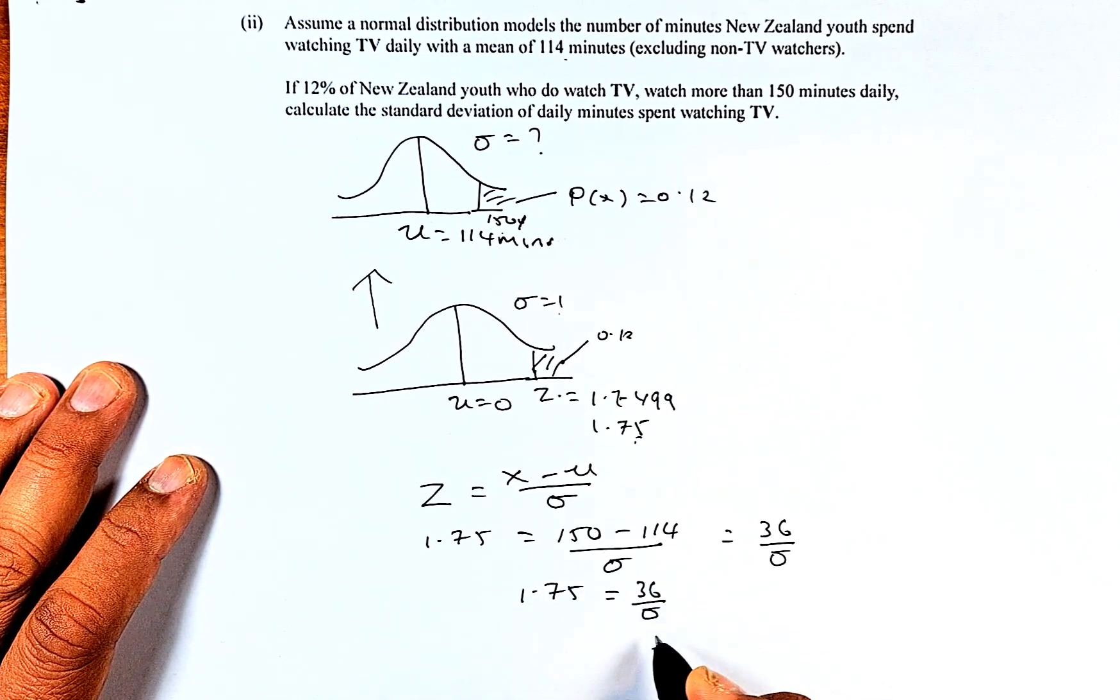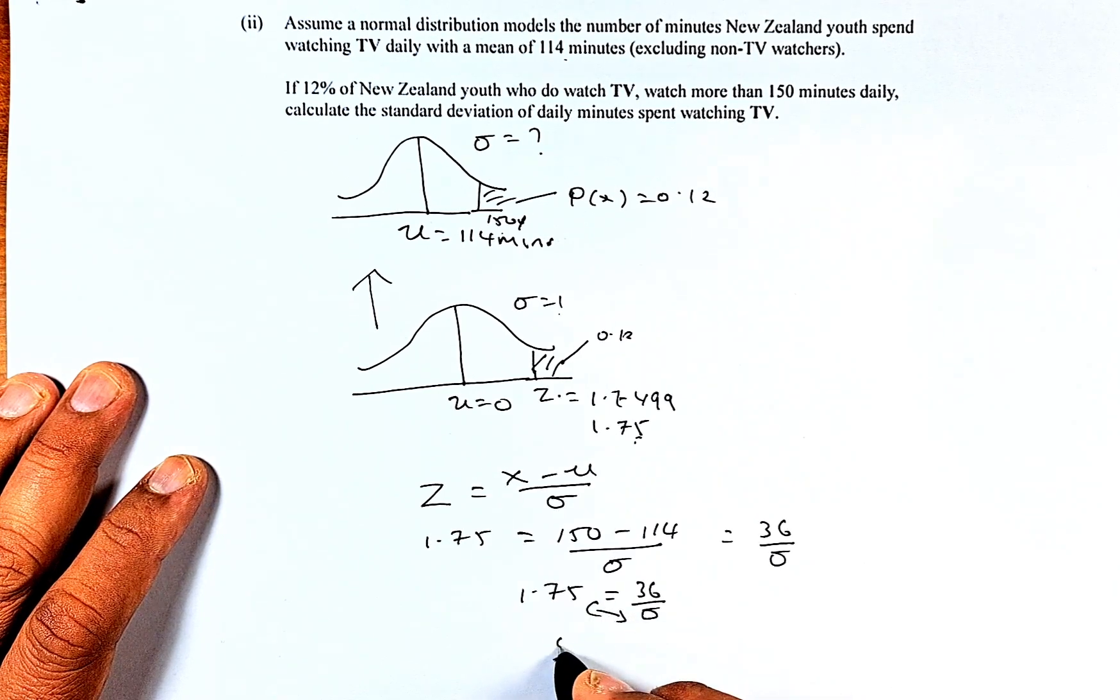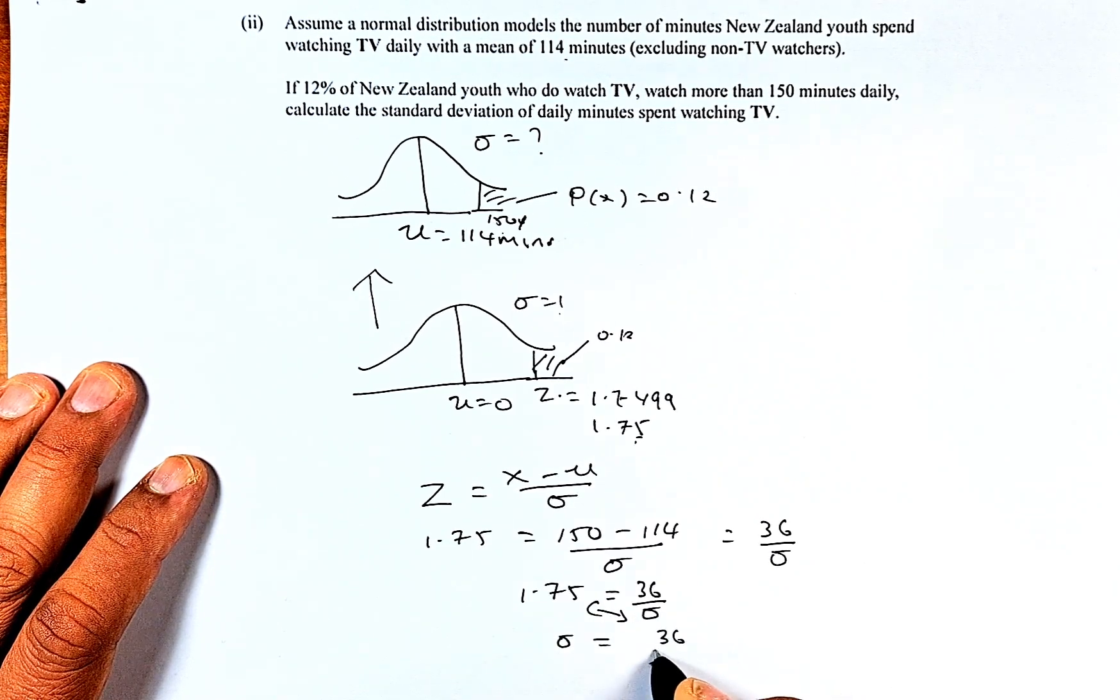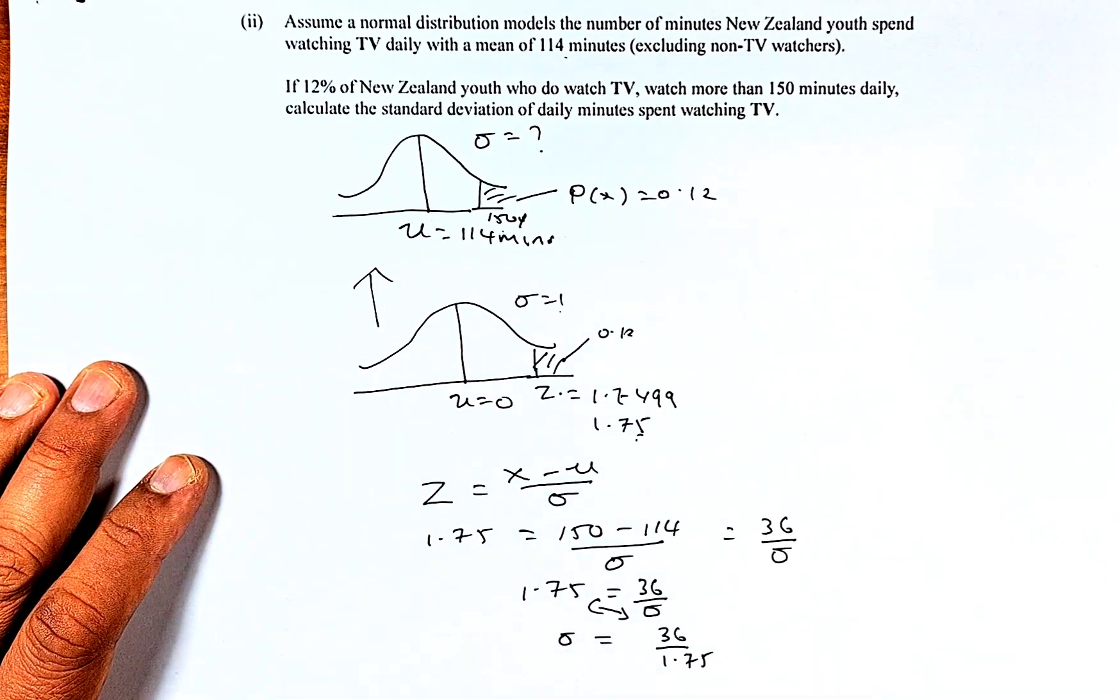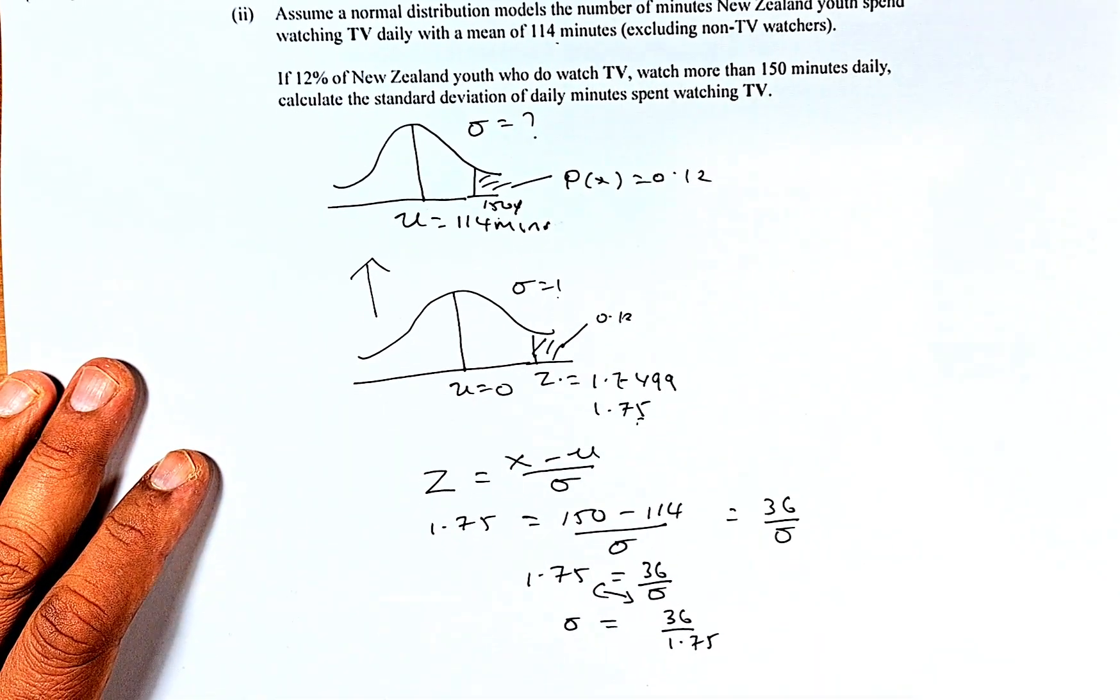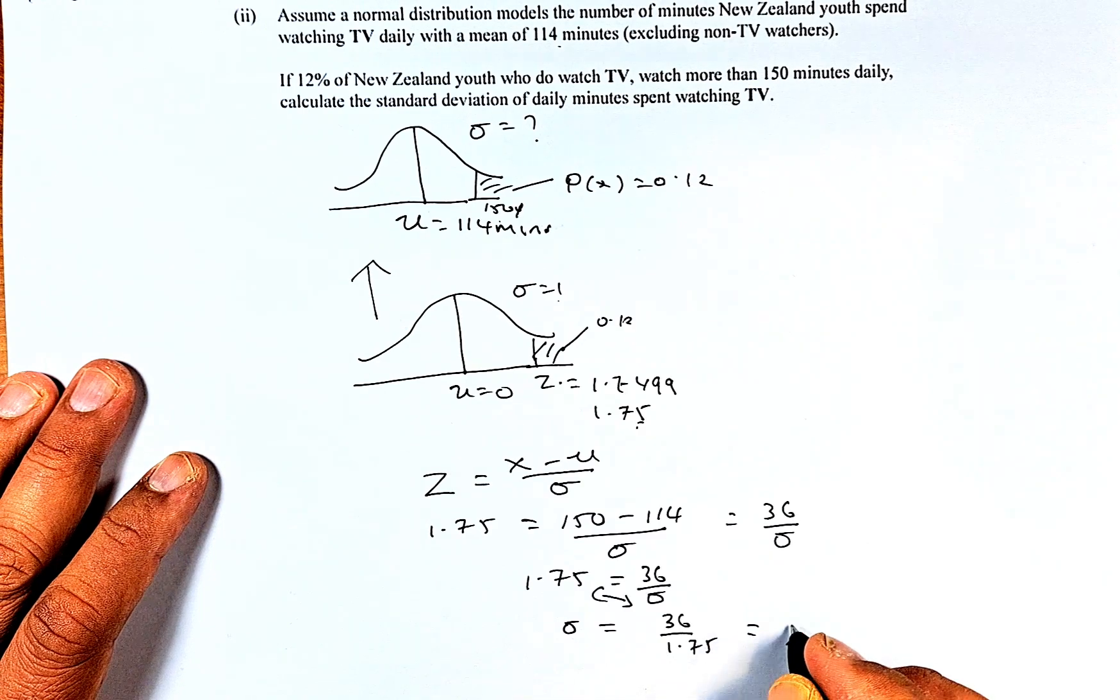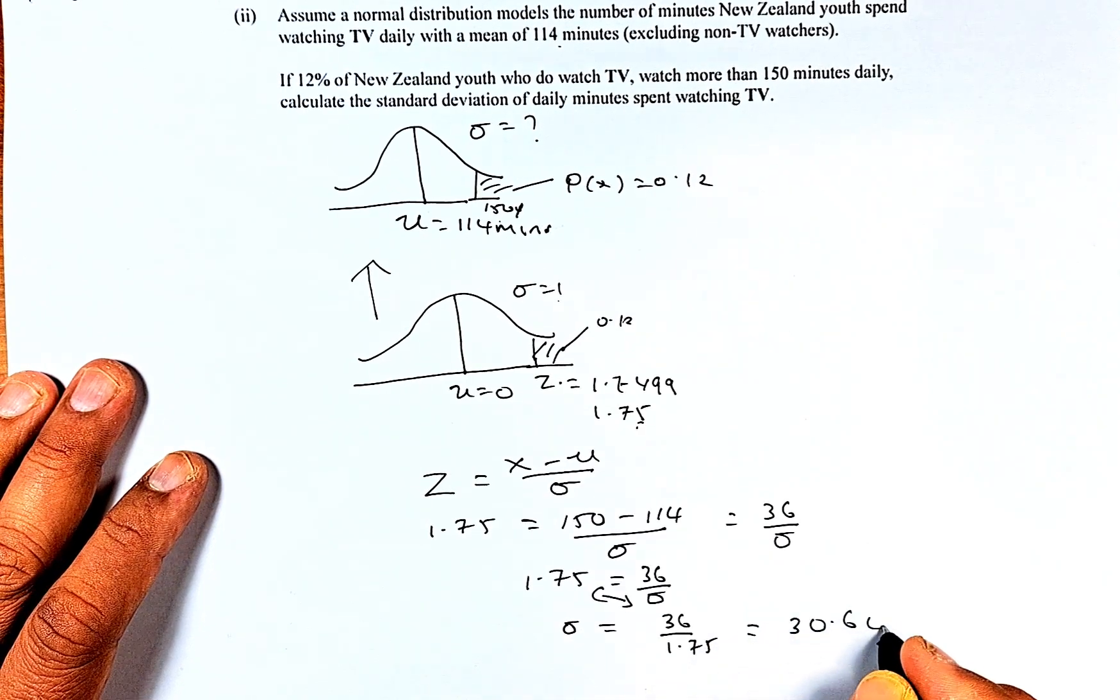Hopefully you can see. And then you just put in your calculator and the sigma is going to be 30.64 minutes. And if you can get that right, that is an excellence or E7 in this paper.